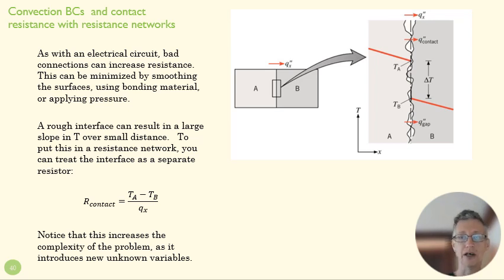If we have some idea of how two materials fit together, what kind of glue we're using, what kind of pressure is on them, we would be able to define by experience what that R_contact is. Alright, that's resistance networks for heat transfer.